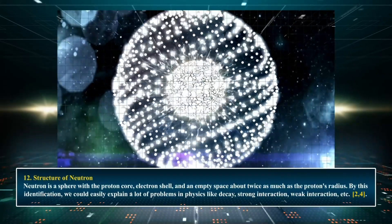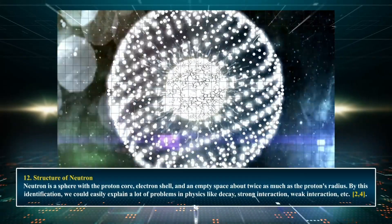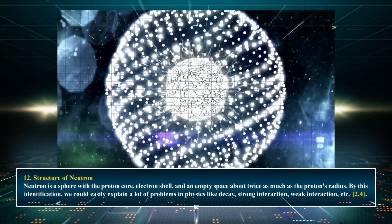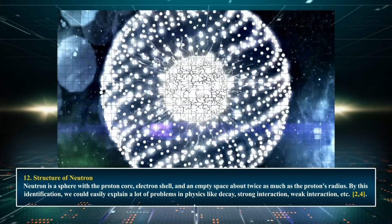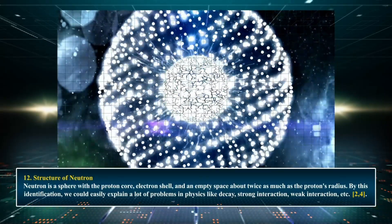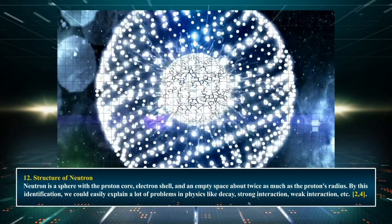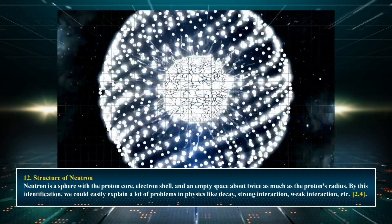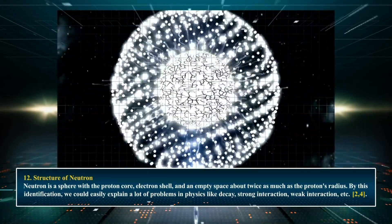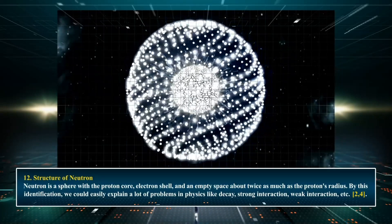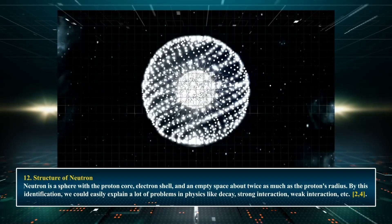Chapter 12: Structure of the Neutron. The neutron is a sphere with a proton core, an electron shell, and an empty space about twice as much as the proton's radius. By this identification, we could easily explain many problems in physics like decay, strong interaction, weak interaction, etc.